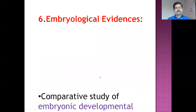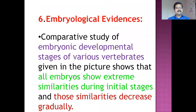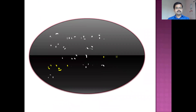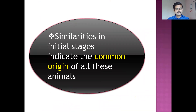In the initial stages there is a great deal of similarity, and those similarities decrease gradually. From this we can conclude that the similarities in the initial stages of the different embryos of the vertebrate animals indicate the common origin of all these animals.